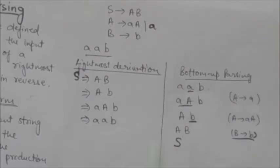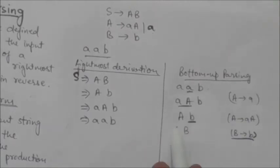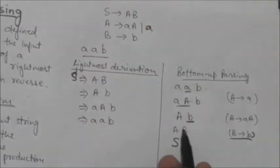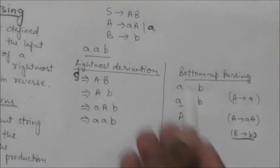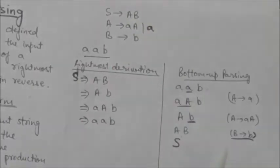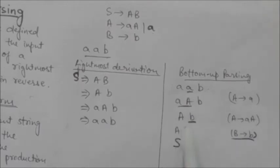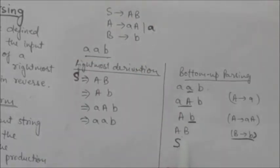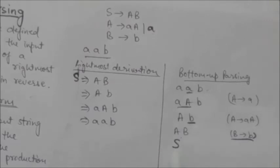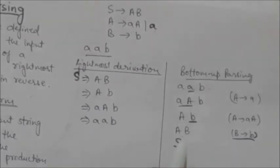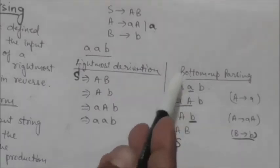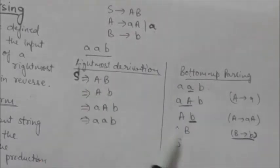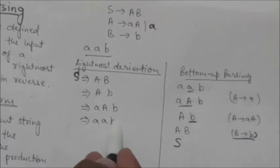So substring b is the handle of the right sentential form in string Ab. Now we have the string aB. Looking at the production rule S → aB, the string aB appears at the right side. If we reduce aB by the left side, the start symbol S, we get the symbol S. This completes the bottom-up parsing of string aab — we have traced out its rightmost derivation in reverse.